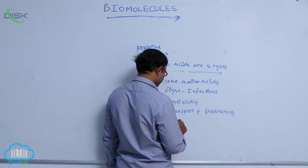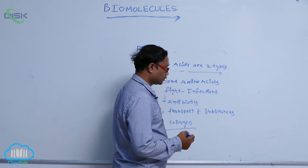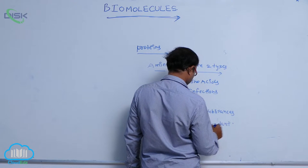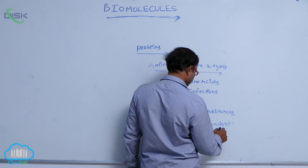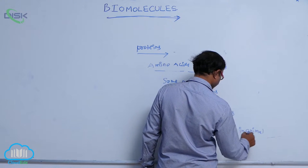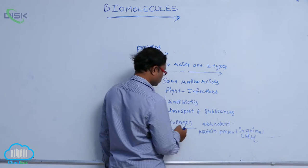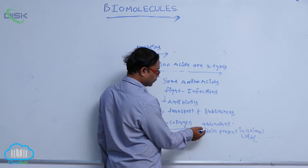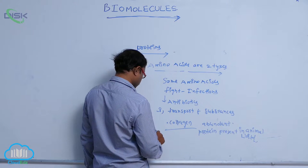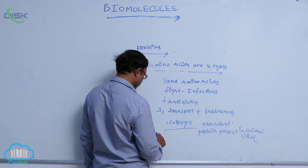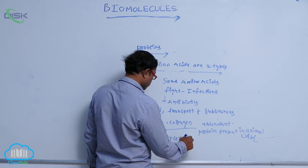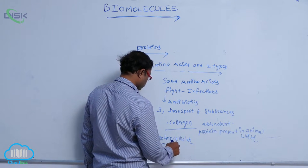Collagen is an important protein. It is the most abundant protein present in the animal world. Collagen is also known as the intercellular ground substance.